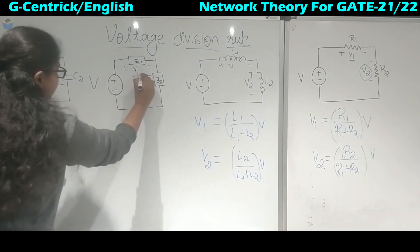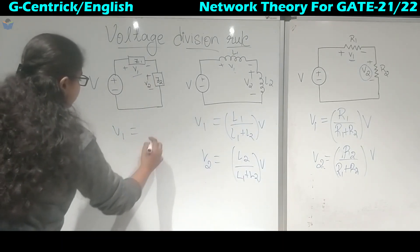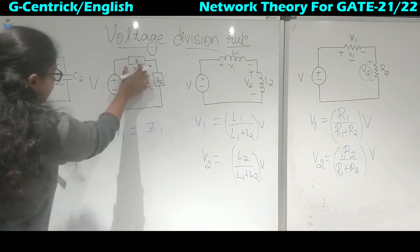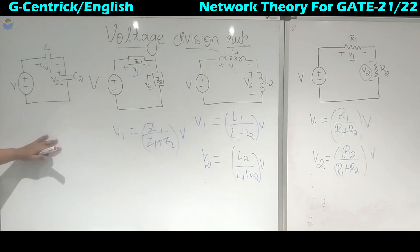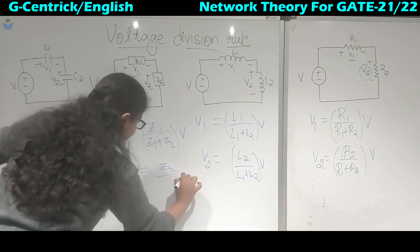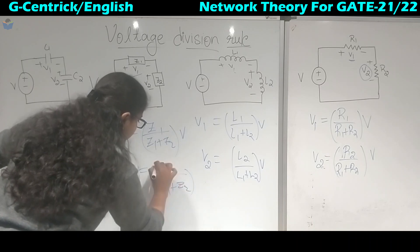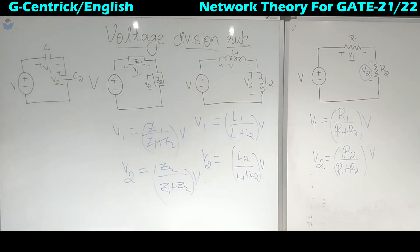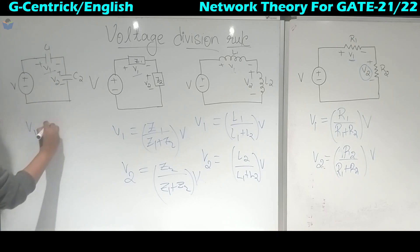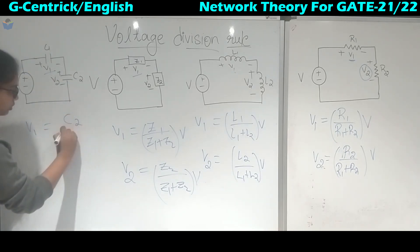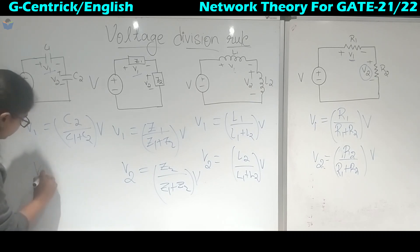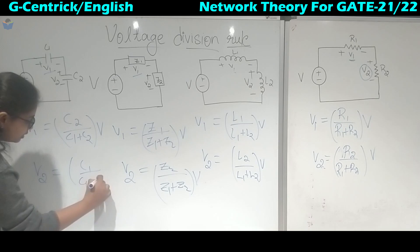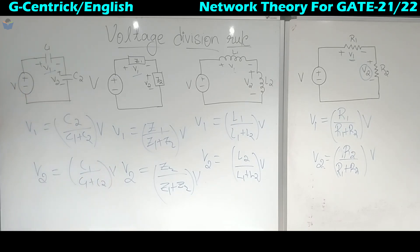Coming to impedance, similarly, if you want to calculate V1, it follows the resistor rule: take Z1 upon Z1 plus Z2, multiplied by total voltage. Then V2 is Z2 upon Z1 plus Z2 multiplied by total voltage. Coming to the capacitor, it runs opposite to the inductor, resistor and impedance. So if you have to calculate V1, take the other capacitor value C2, divided by C1 plus C2, multiplied by total voltage. Similarly, V2 is C1 upon C1 plus C2, multiplied by total voltage.